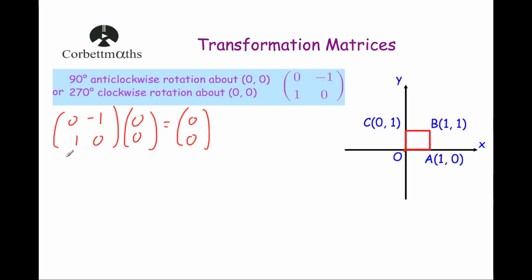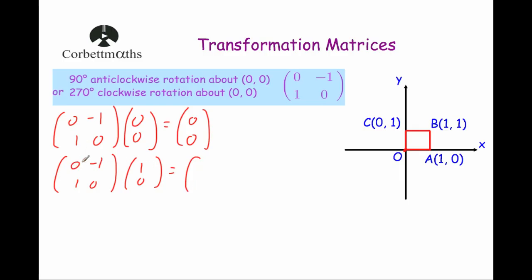Next, we're going to multiply point A, which is the point 1, 0, by the matrix 0, minus 1, 1, 0. Because it's a 90 degrees anti-clockwise rotation about the origin, it should move to where point C is, the point 0, 1. Multiplying the first row by the column: 0 times 1 is 0, minus 1 times 0 is 0, adding them together is 0. Then multiplying the second row by the column: 1 times 1 is 1, 0 times 0 is 0, adding them together is 1. So it moves to the point 0, 1 — so the point A dash is there.